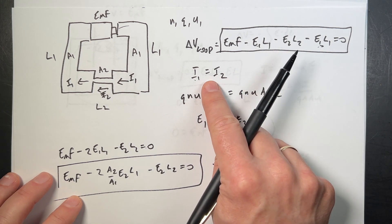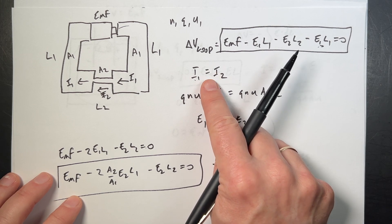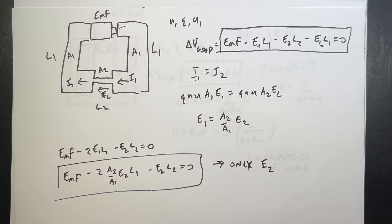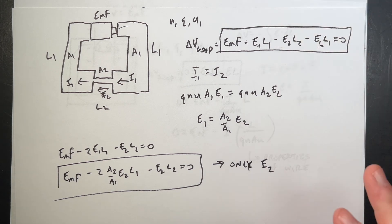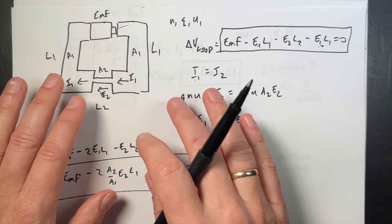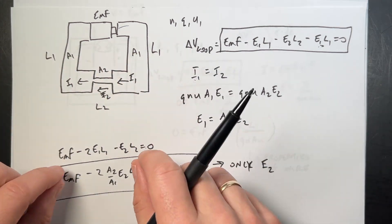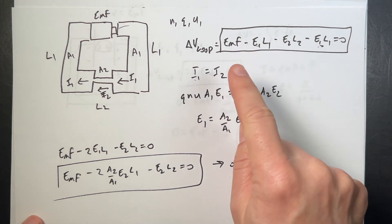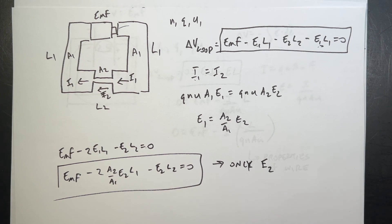The most important things: the loop rule — conservation of energy — and the junction rule — conservation of charge. That's really what this whole chapter is about. The book goes through some other ideas about how fast things work and how we can test this, which is useful, but for solving problems, use the loop rule and junction rule. The next chapter is going to be a lot more calculations, but also awesome.